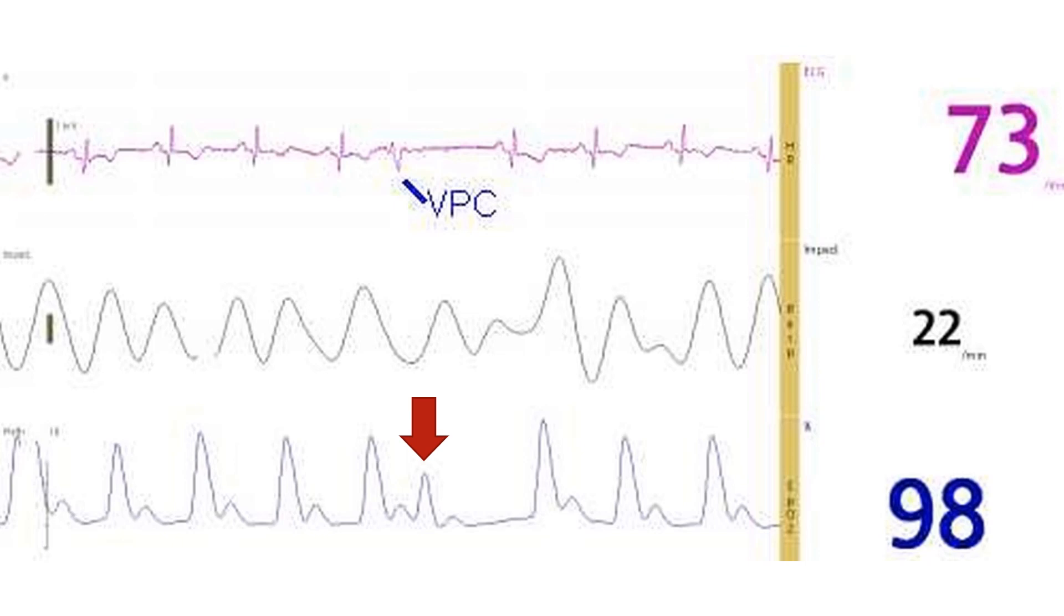The next beat following the compensatory pause has a longer diastolic period as well as atrial booster with the preceding P wave. Hence the pulse volume is higher for the post ectopic beat. This is also reflected in the pulse oximetry tracing.